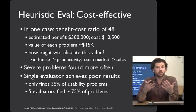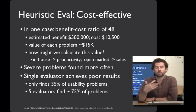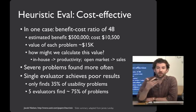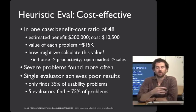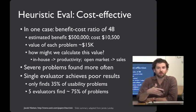One of the reasons people use heuristic evaluation is that it can be an extremely cost-effective way of finding problems. In one study that Jacob Nielsen ran, he estimated that the cost of the problems found with heuristic evaluation were $500,000, and the cost of performing it was just over $10,000 — a 48-fold benefit-cost ratio for this particular user interface. Obviously these numbers are back-of-the-envelope and your mileage will vary. You can estimate the benefit using productivity increases for in-house tools, like an expense reporting system, or from sales and other measures for software on the open market.